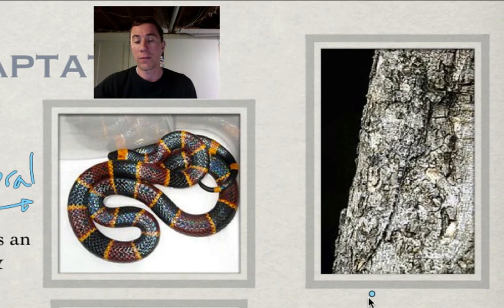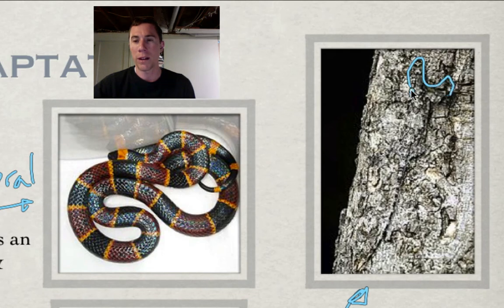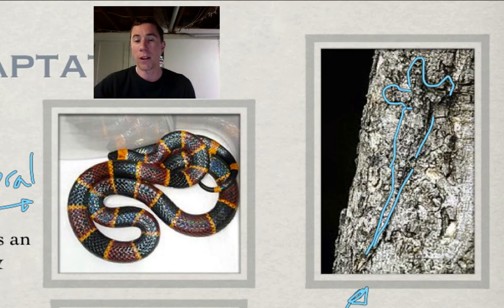Camouflage is another adaptation. In this picture we have some bark on a tree, and you can barely make out there is a lizard right here — there's his head, his arm comes up, one leg goes out that way, another leg out this way, and here's his body. His tail comes down this way. That's camouflage, and that's a great adaptation for organisms.